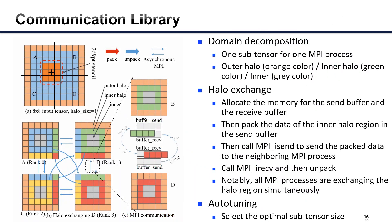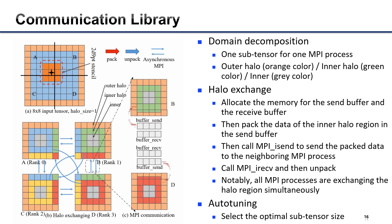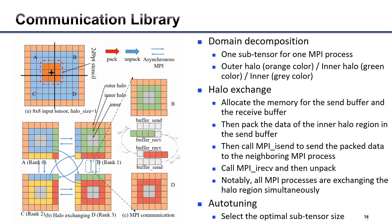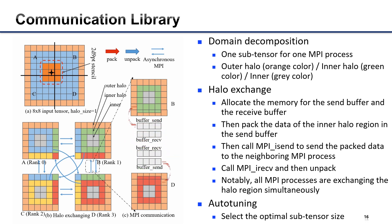We design an efficient MPI communication library for halo exchanging. It performs domain decomposition, where each sub-tensor of the input is assigned to an MPI process. We dissect the sub-tensor into three parts: outer halo, inner halo, and inner. For halo exchanging, each MPI process allocates send and receive buffers, packs and unpacks data, and calls MPI send or receive. Notably, all MPI processes exchange the halo region simultaneously. We perform auto-tuning to find optimal parameters, including the sub-tensor size for domain decomposition and the tile size for the tile primitive.